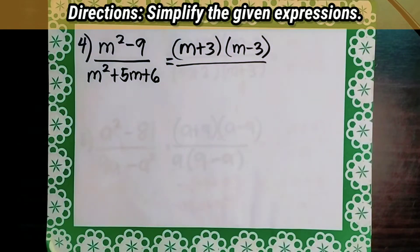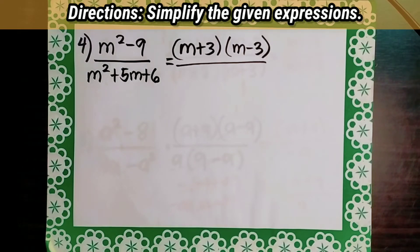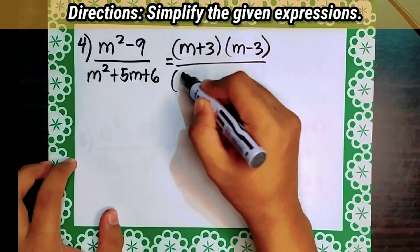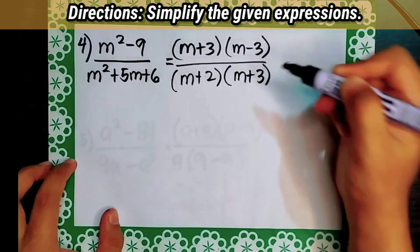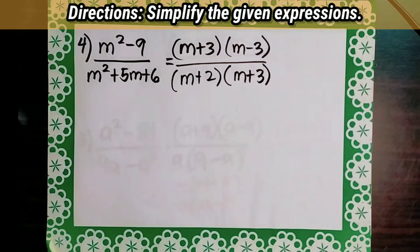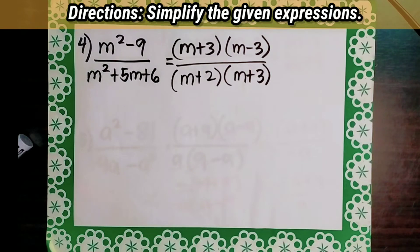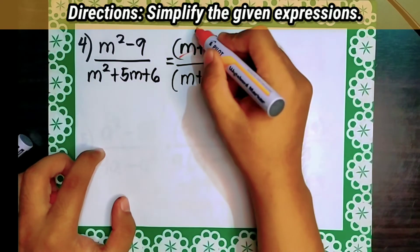Over the factor of m squared plus 5m plus 6 — using the last term, what factors of 6, when added, give positive 5? That is 2 times 3. So the factor is m plus 2 times the quantity m plus 3. Now let's divide out the common binomial. When the numerator and denominator are the same, they equal 1. So m plus 3 becomes 1.